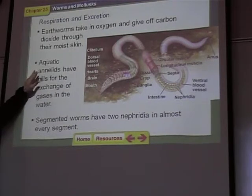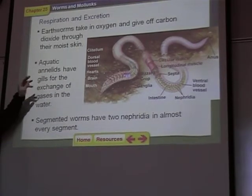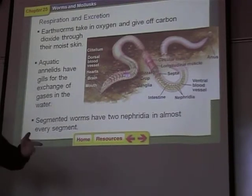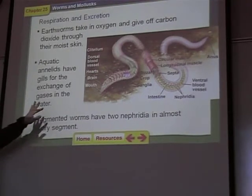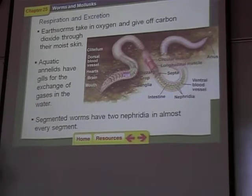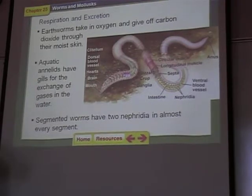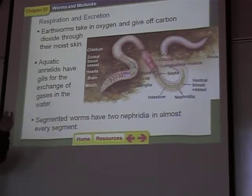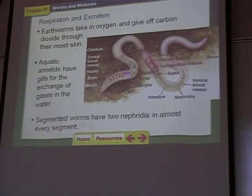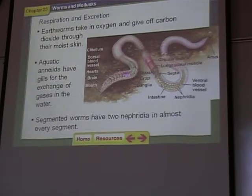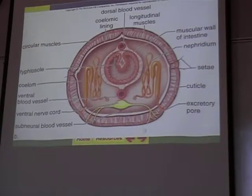Now the aquatic annelids — the worms that swim in the ocean — they don't have to worry about drying out. So they have what are called gills: little extensions on the surface of their body that help absorb oxygen. I already talked about the nephridia in each segment — the little yellow things shown here. Every segment has two of them, and they're used for getting rid of wastes.